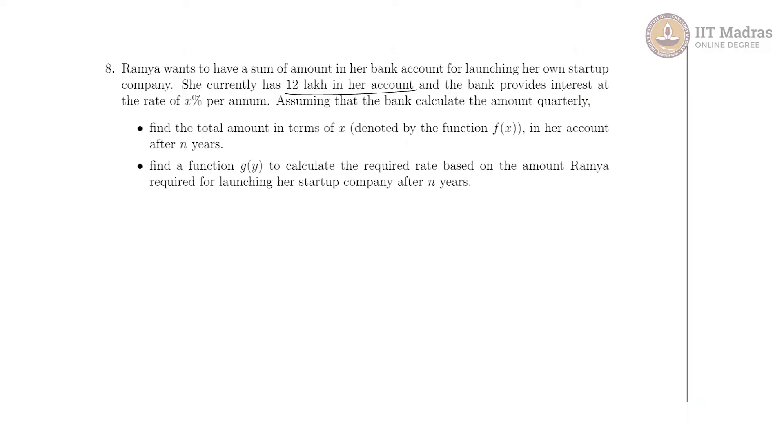Quarterly means after three months. Find the total amount in terms of x, denoted by the function f(x), in her account after n years. So if she has amount A in her account at this time and she gets interest at rate of x percent, assuming that the bank calculates quarterly, find the amount in terms of x.